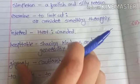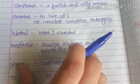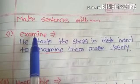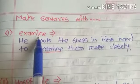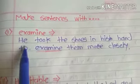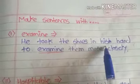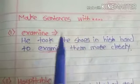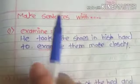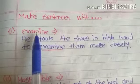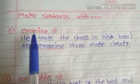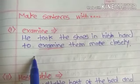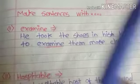Now let's discuss: make sentences with the word 'examine.' We have to take this word and make a sentence. For example: 'He took the shoes in his hand to examine them more closely.' Your homework is also to make sentences using the word 'examine' — different sentences, as you like.